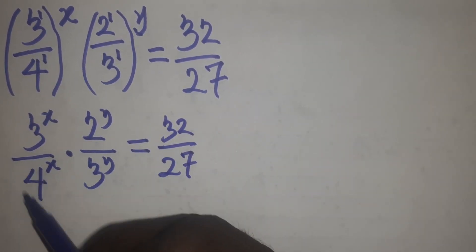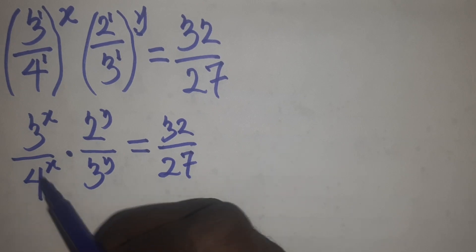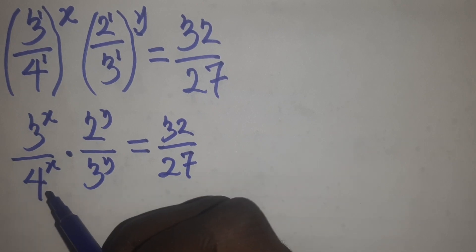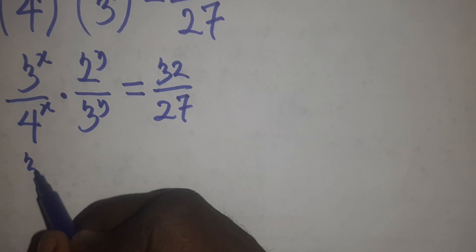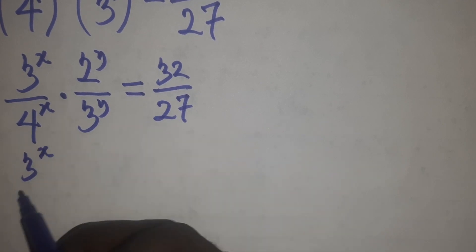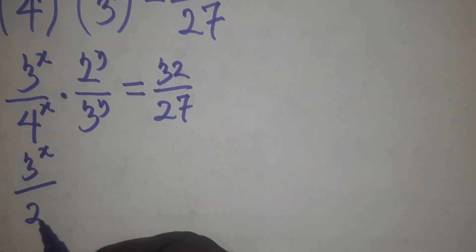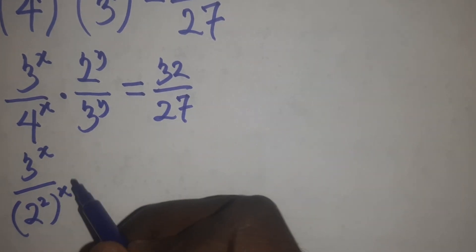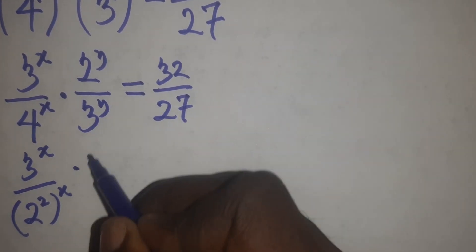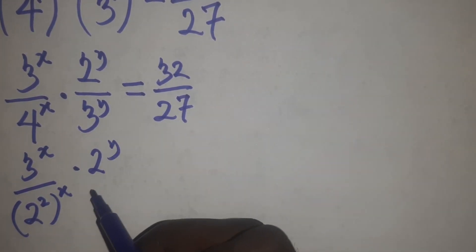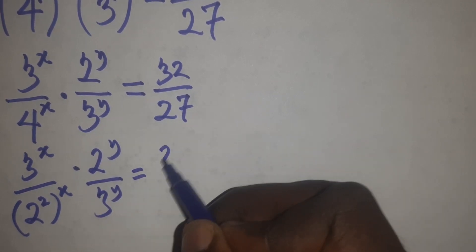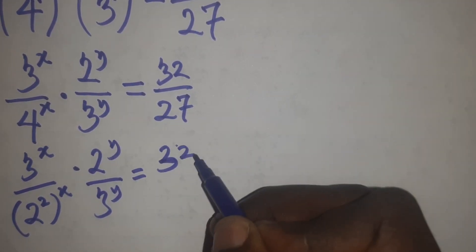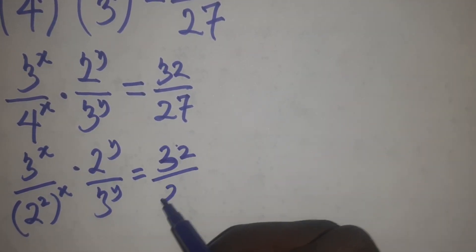I can write 4 as a power of 2, so 4 can now be written as 2 raised to power 2. So I have 3 raised to power x over 2 raised to power 2, still raised to power x, times 2 raised to power y over 3 raised to power y, equals 32 over 27.